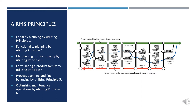Maintaining product quality by utilizing principle three. Maintaining product quality is a critical consideration when designing a manufacturing system. Each machine has a tolerance, and dimensional deviation from the norm accumulates as the part moves along the system. Therefore, the system designer should implement principle three: design optimal embedded product quality inspection into manufacturing systems.